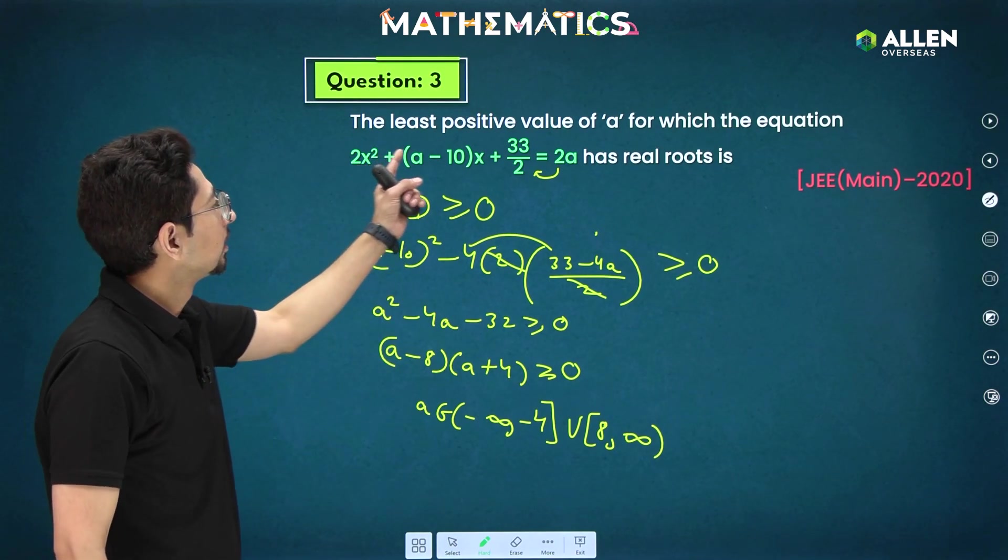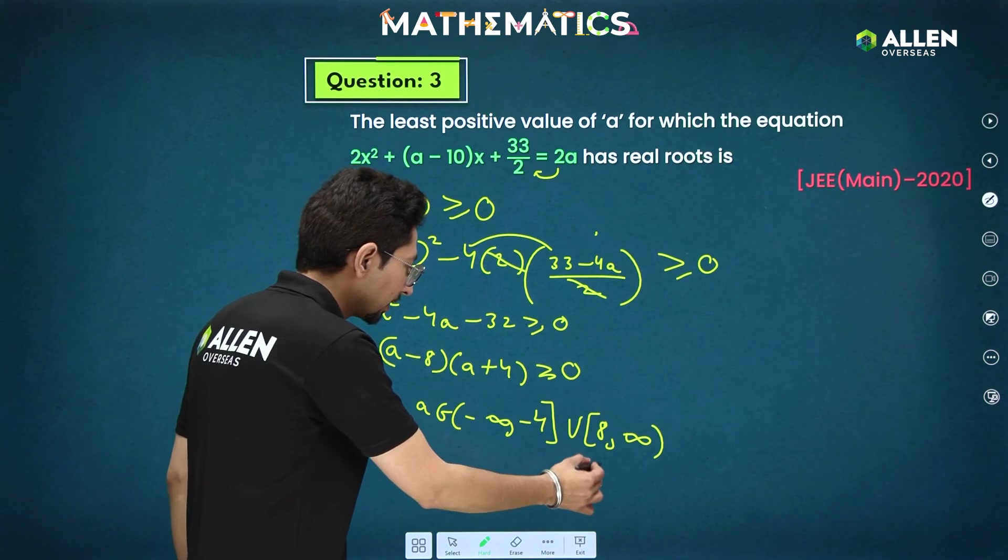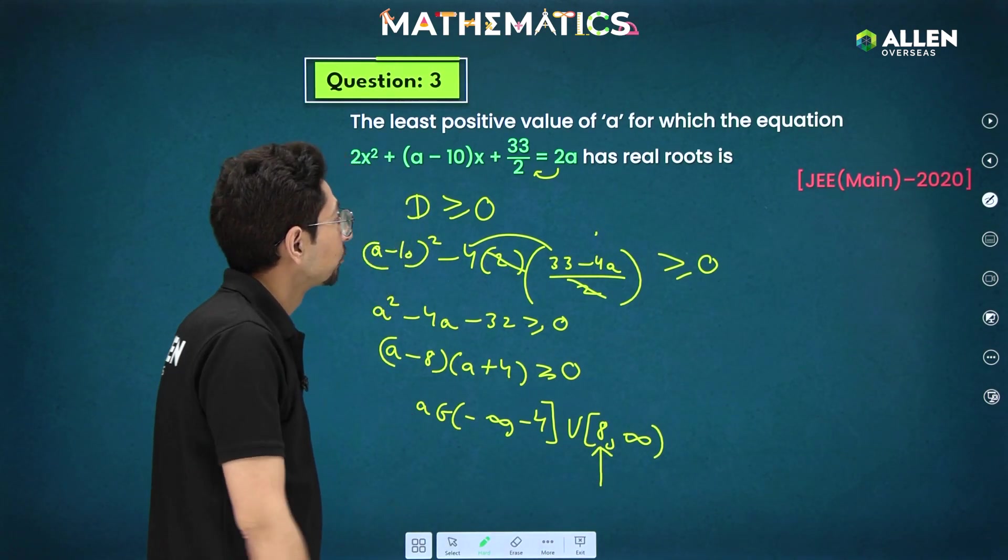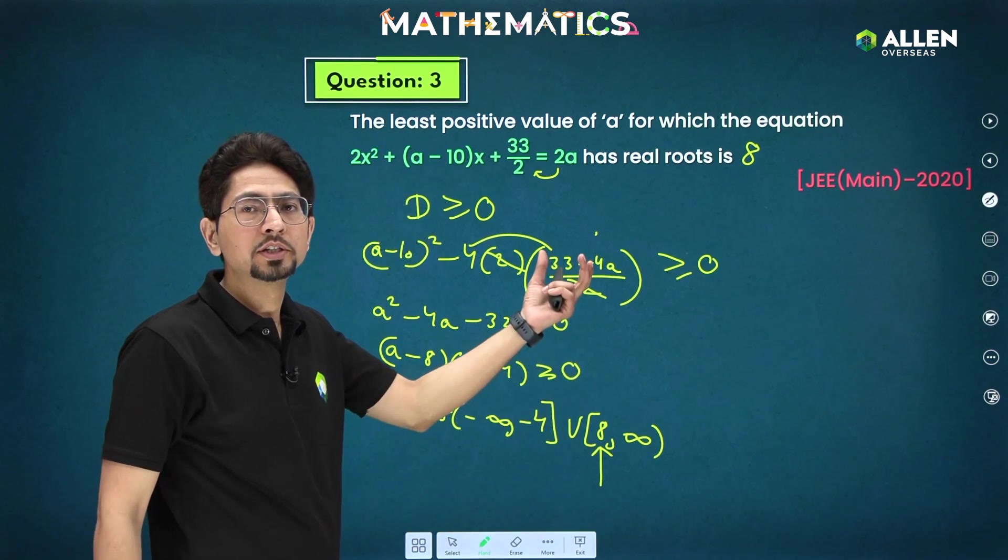Least positive value, that will be definitely 8 only. Least positive value will be 8 only. So, answer for this one, that is 8. This is also previous year question asked in J-Main 2020.